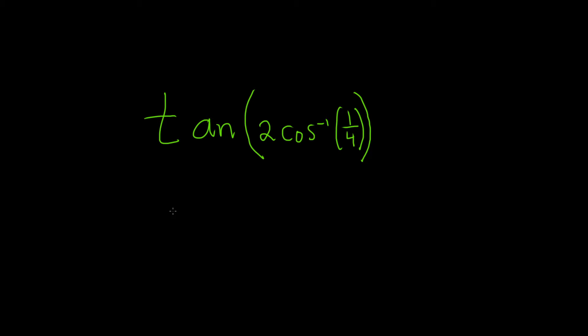In this problem, we are going to work out the tangent of 2 times cosine inverse of 1/4. Before we do this problem, let me show you an identity that we're going to use.